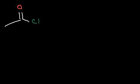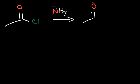Now what's going to happen if we put an acid chloride with an amine? Let's react it with ammonia. When you combine an acid chloride with ammonia, you're going to get an amide.